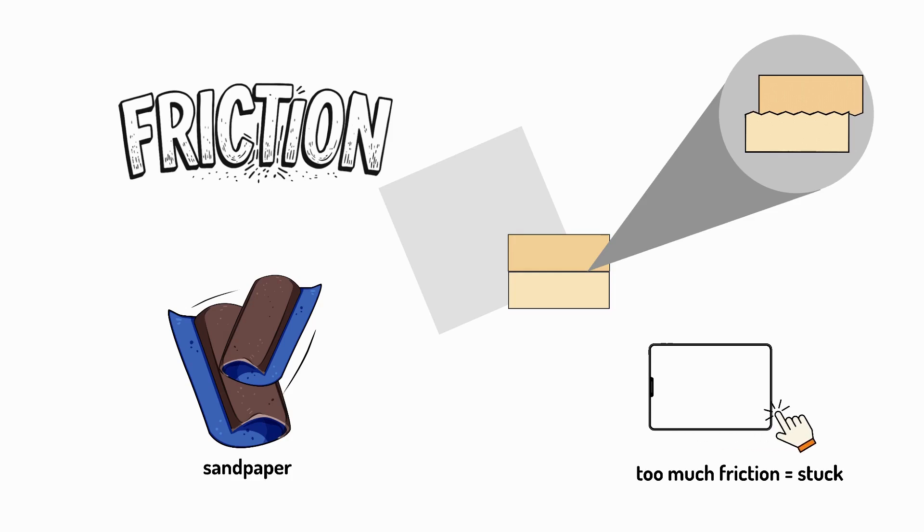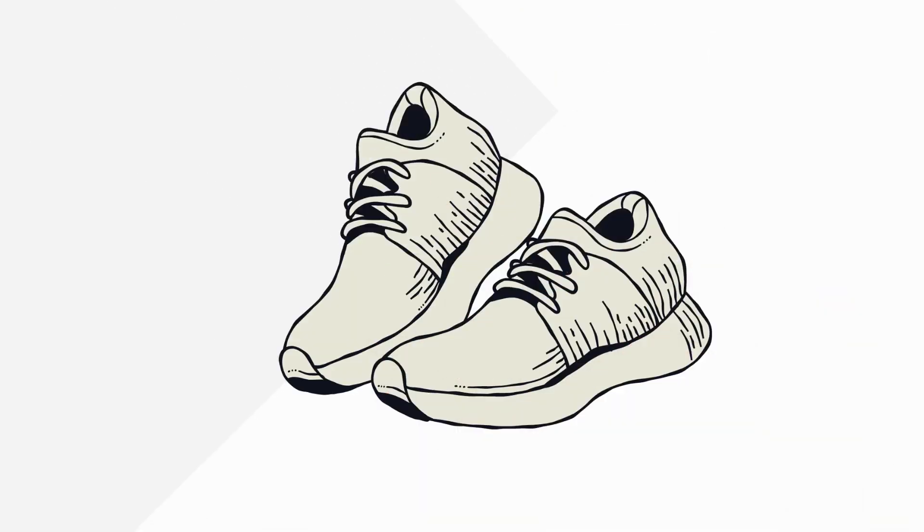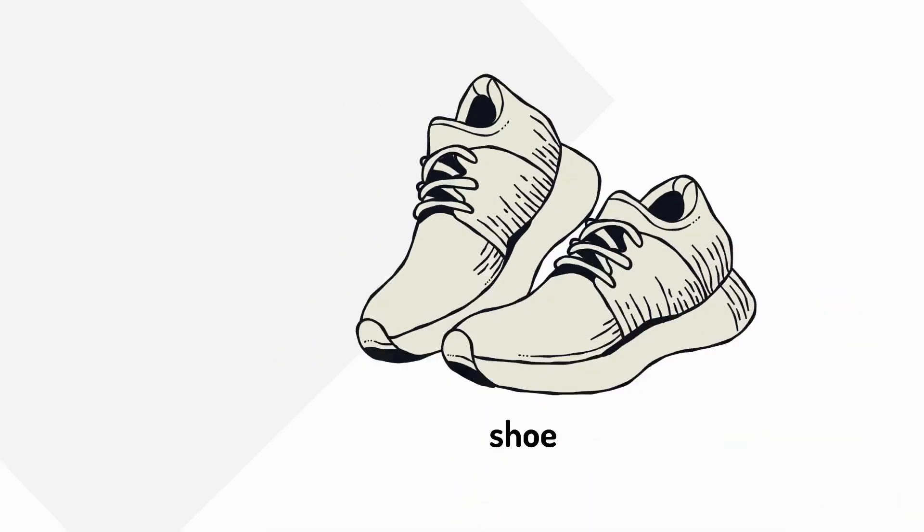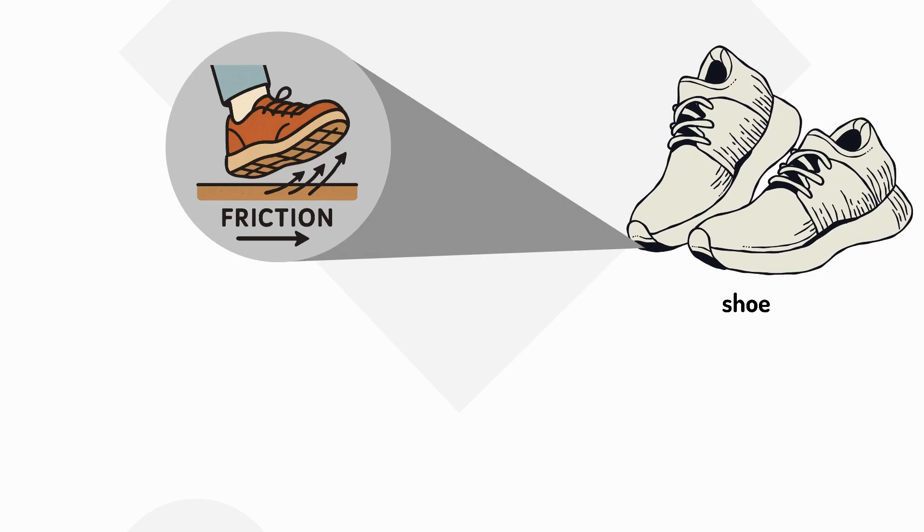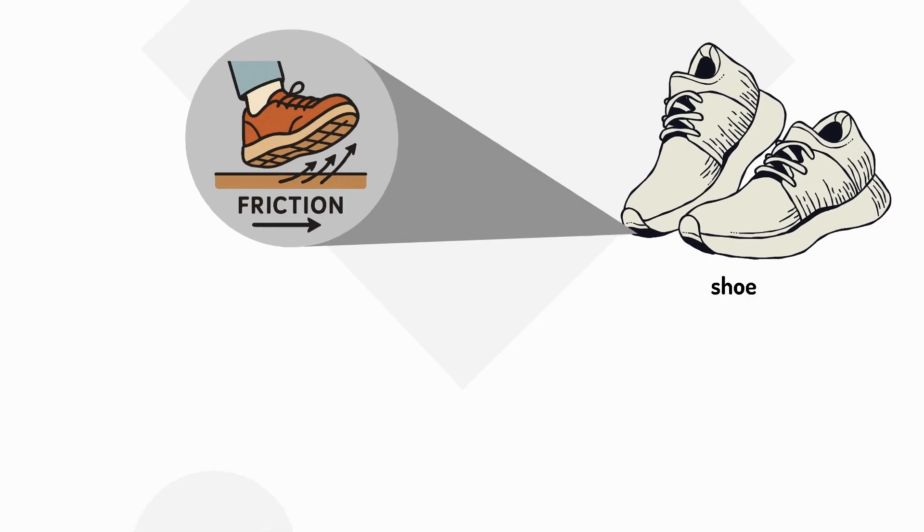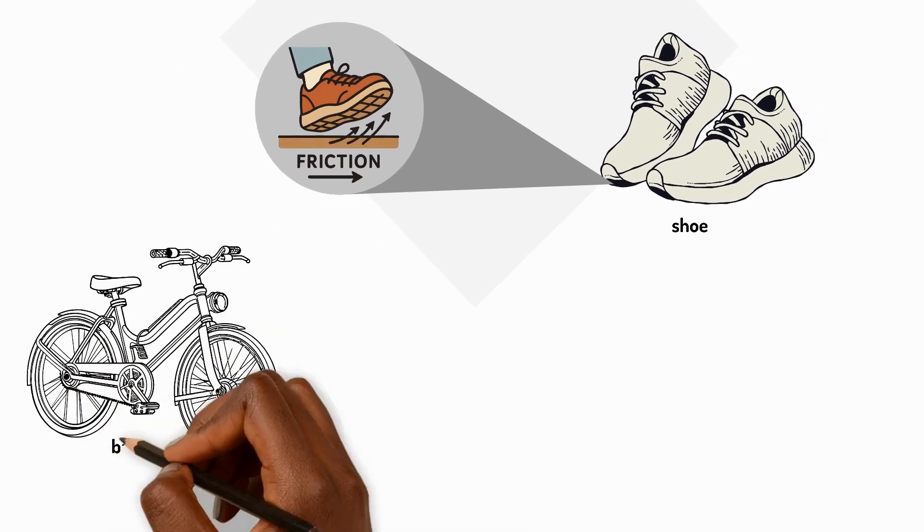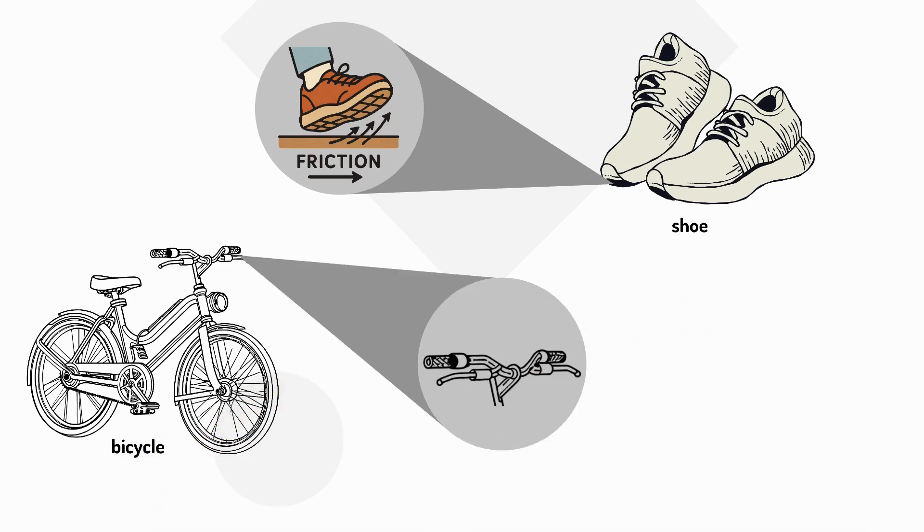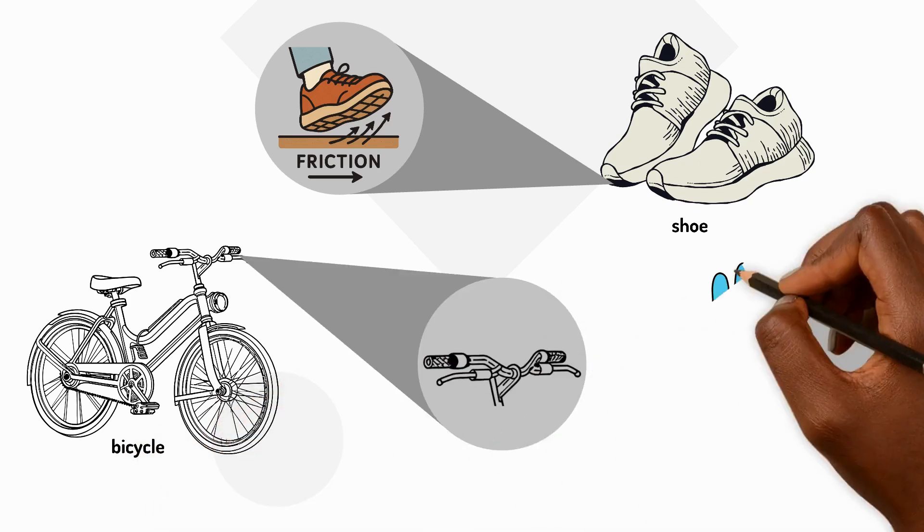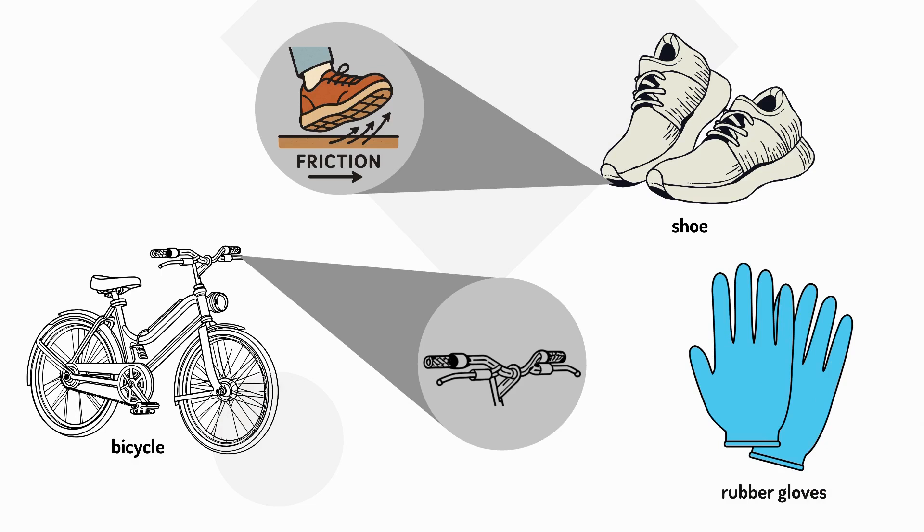Where do we want lots of friction? On your shoes. The bumpy pattern on the bottom helps grip the floor so that you don't slip. Bicycle brakes need friction to stop the wheels. And rubber gloves help you hold wet dishes without dropping them.